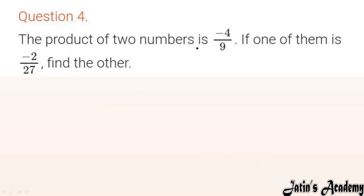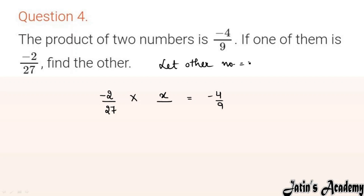Question 4: The product of two numbers is minus 4/9. One of them is minus 2/27 — find the other. Let other number be x. So x × (minus 2/27) = minus 4/9. Move minus 2/27 to divide: x = minus 4/9 ÷ (minus 2/27). Divide converts to multiply, take reciprocal.